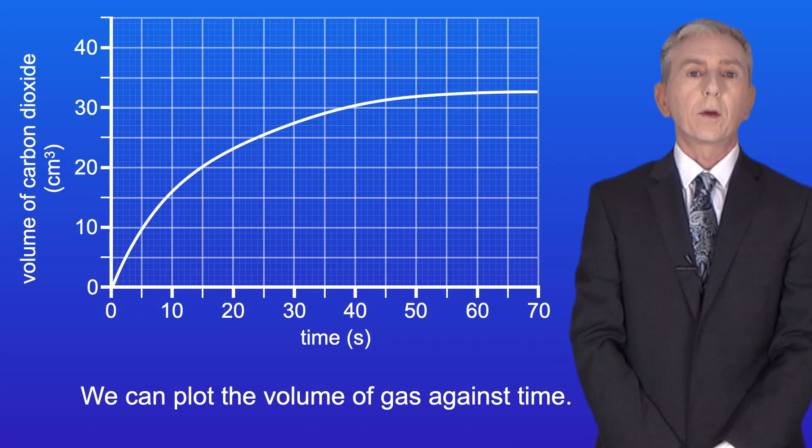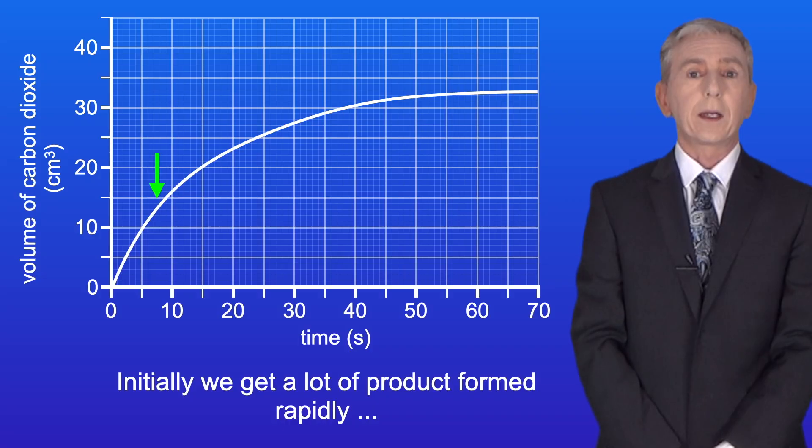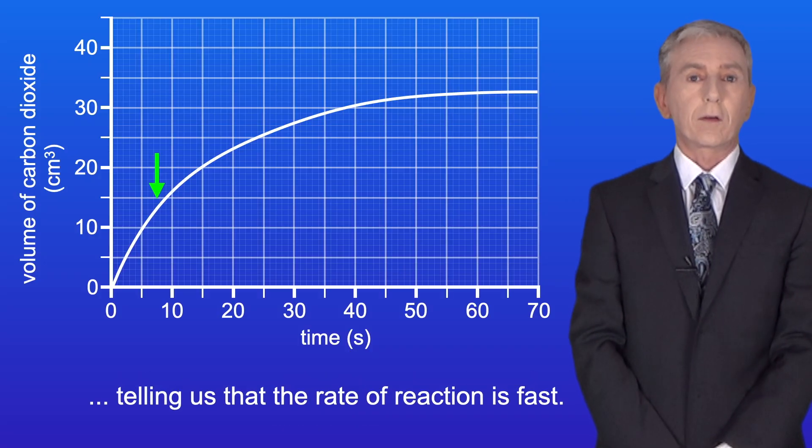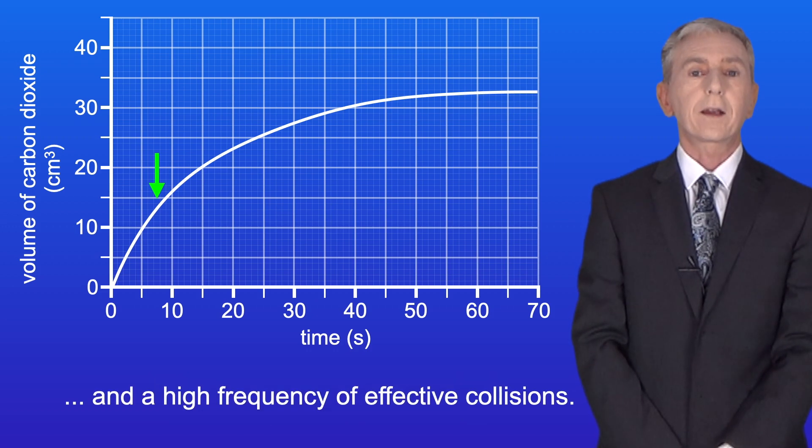We can plot the volume of gas against time and we get a graph like this. Initially we get a lot of product formed rapidly telling us that the rate of reaction is fast.